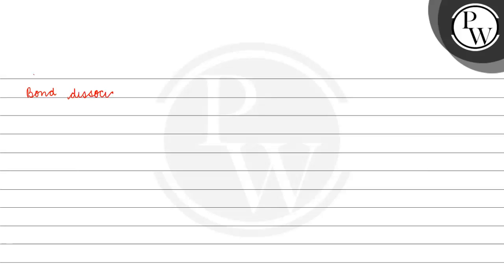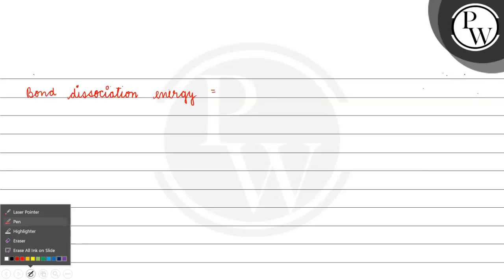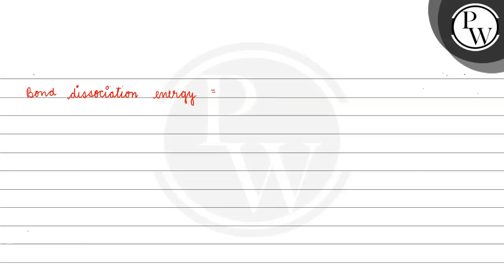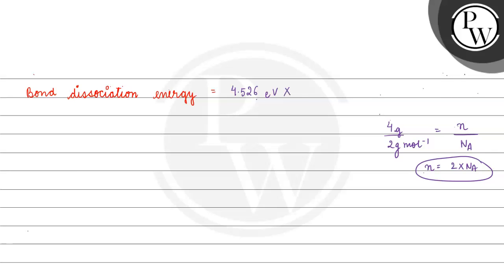For bond dissociation energy: the question gives 4.526 eV per molecule for H₂. To find how many molecules are in 4 grams of hydrogen, number of moles = mass / molar mass = 4/2 = 2 moles. So number of molecules = 2 × Nₐ. Bond dissociation energy = 4.526 eV × 2 × Nₐ.